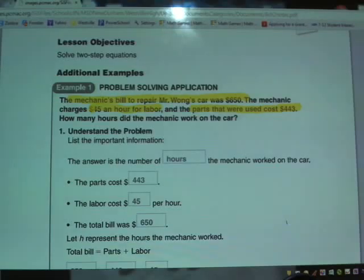We have two things that go together to make my total bill here. We have the number of hours spent on labor, and we know that labor cost $45 an hour. Then we have the cost of the parts, and no matter how long we work on the car, the parts are the same, $443. And that's got to equal my total.